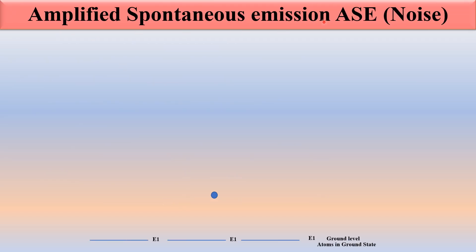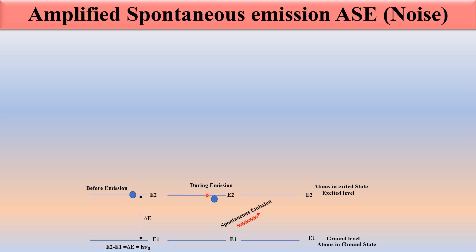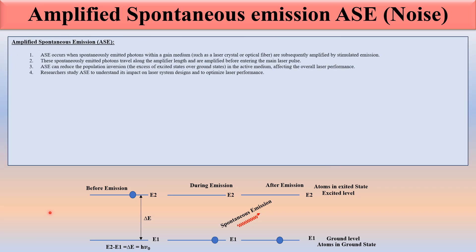Now let's look at amplified spontaneous emission ASE noise. There is an energy difference delta-E equal to E2 minus E1. Before emission, during emission, spontaneous emission occurs automatically because electrons move from a higher energy state to a lower energy state without interaction with any incident signals. ASE occurs when spontaneously emitted photons within a gain medium are amplified — that is what we call amplified spontaneous emission.